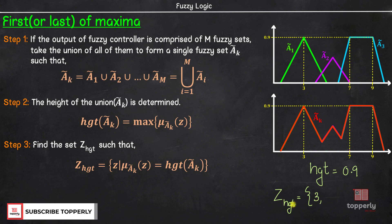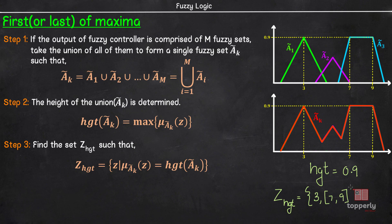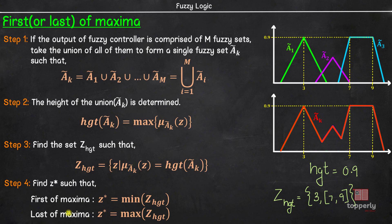Similarly, this set includes all the values from 7 to 9, including 7 and 9, because the membership values there are also equal to the height. To find the defuzzified value z* by first of maxima, we simply need to find the lowest value in the set hgt. In this example, as per the first of maxima method, z* = min({3} ∪ [7, 9]) = 3. So the defuzzified value as per the first of maxima method is 3.